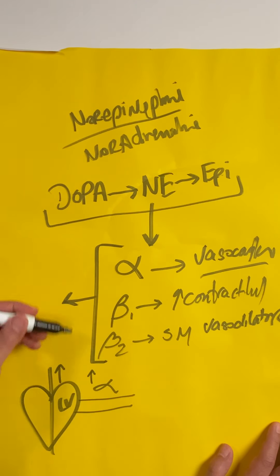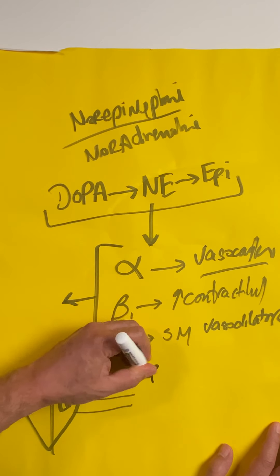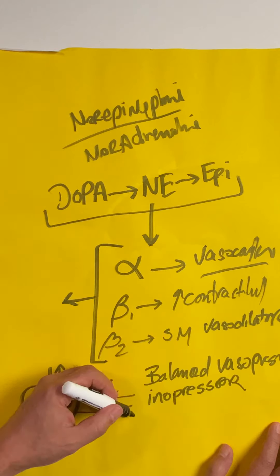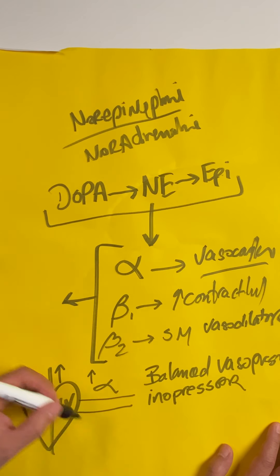This is why people refer to this as a balanced vasopressor, and some people call this an inopressor. The point is it's not a pure vasoconstrictor and not a pure inotrope—it's a balance of both, and that's what makes this so good.